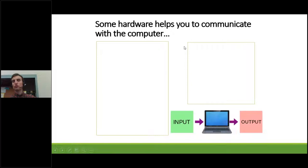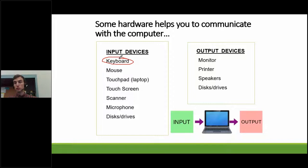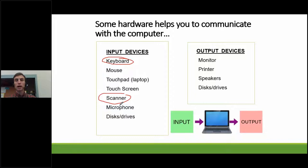We can break down hardware into two more specific categories: input devices and output devices. Input devices allow you to put things into the computer. For example, a keyboard lets you type into the computer and words appear on screen — it's an input device. A scanner lets you take a physical document or picture, scan an image of it, and save it as a file on your computer — also an input device. A microphone lets people connected to your computer hear you or lets you record yourself — also an input device.